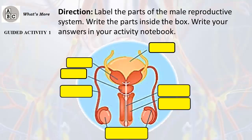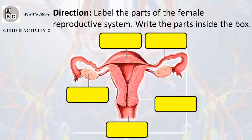Direction: Label the parts of the male reproductive system. Write the parts inside the box. Write your answers in your activity notebook. Direction: Label the parts of the female reproductive system. Write the parts inside the box.